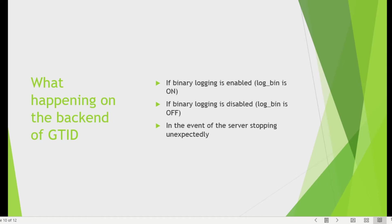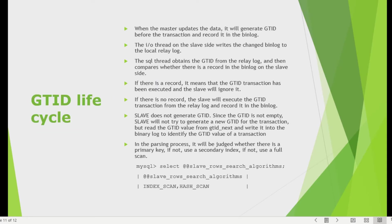If the MySQL server stops unexpectedly, the set of GTIDs from the current binary log file may not be saved in the gtid_executed table. These GTIDs are recovered from the binary log file during server restart so replication can continue. However, if binary logging is disabled at restart (using --skip-log-bin or --disable-bin-log), the server cannot access the binary log to recover GTIDs and replication cannot start.